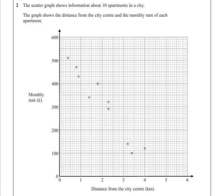Question 2. The scatter graph shows information about 10 apartments in a city. The graph shows the distance from the city center and the monthly rent of each apartment.